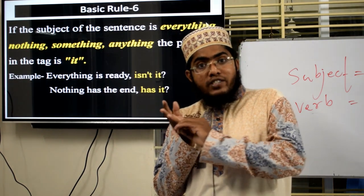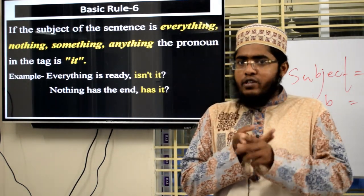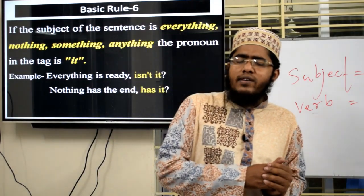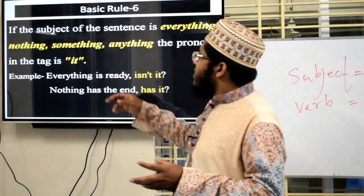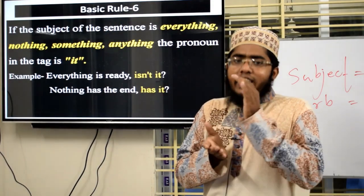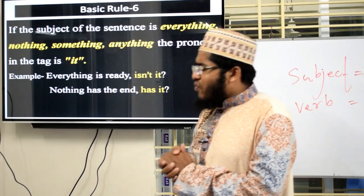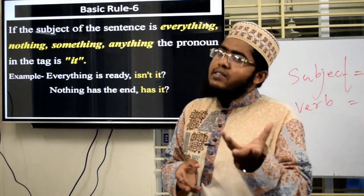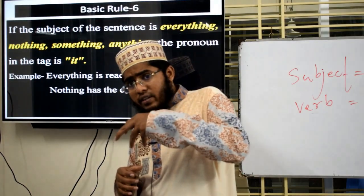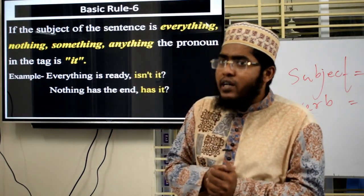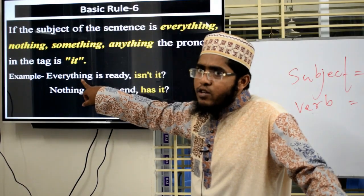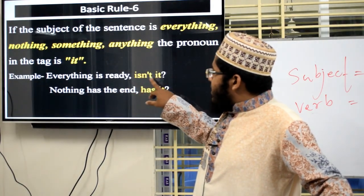Students, we have solved basic rules 1 through 5. Now basic rule 6: if the subject is 'everything', 'nothing', 'something', or 'anything', then in the tag question the subject will be 'it'. Example: 'Everything is ready.' Subject is 'everything', so the tag is 'isn't it?' Another example: 'Nothing has the end.' Subject is 'nothing', so use 'has it' — making the tag 'has it?'